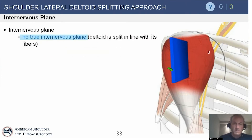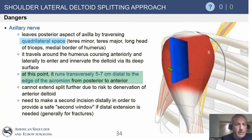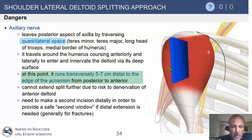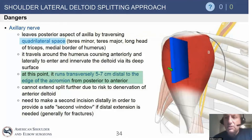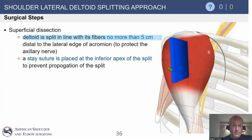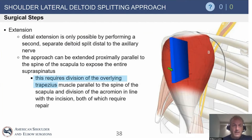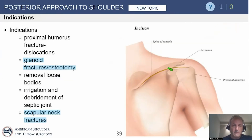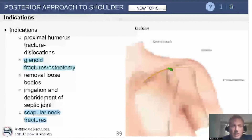There is no true internervous plane with the lateral deltoid splitting approach since we're splitting the deltoid. The axillary nerve is again the major concern — it runs transversely five to seven centimeters distal to the acromion, but depending on patient size could be as close as three to five centimeters. Trauma surgeons may make a second window for indirect reduction or plate placement, but most shoulder surgeons prefer the deltopectoral approach for proximal humerus fractures. Extension is limited distally because the axillary nerve and split deltoid restrict it.